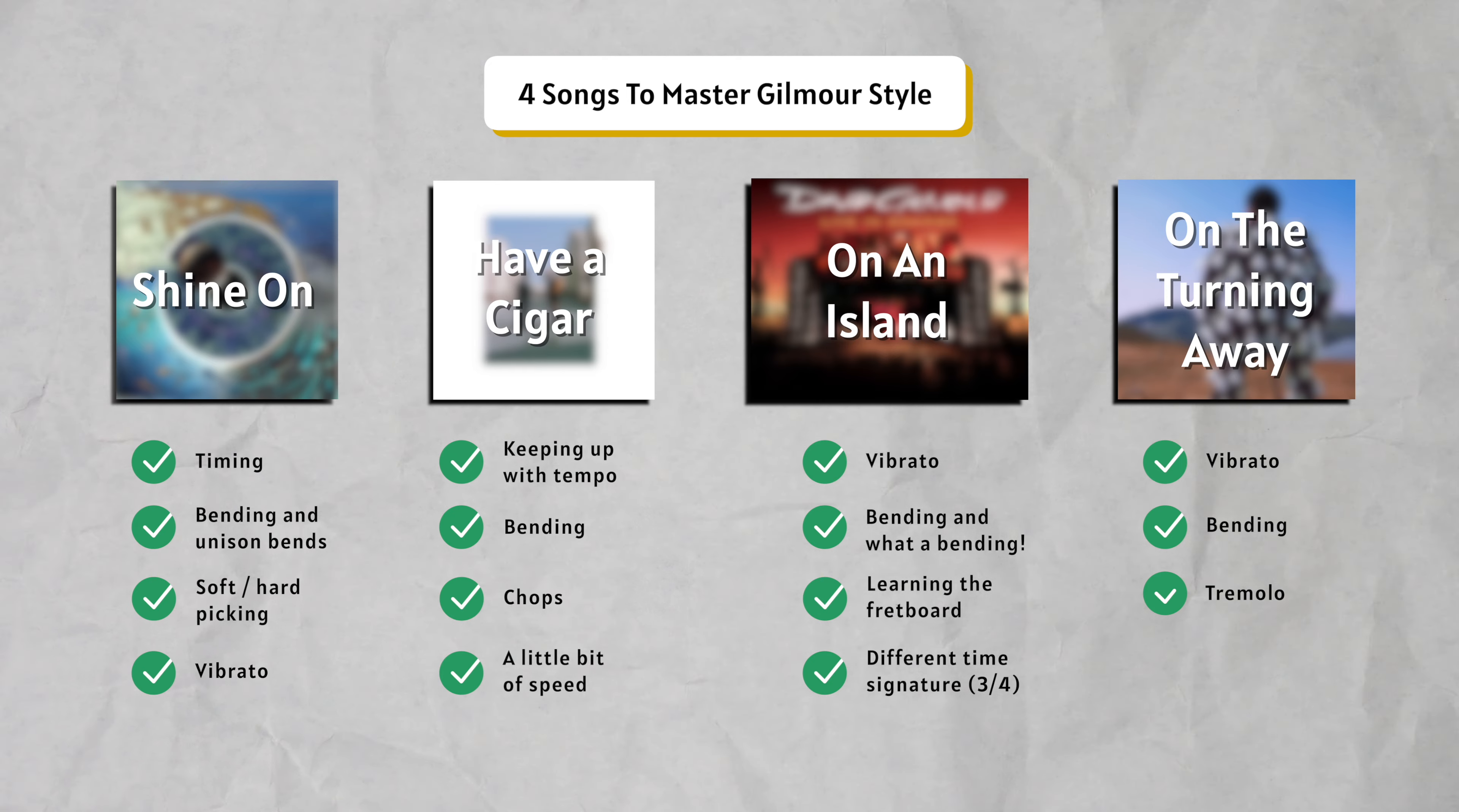So On the Turning Away will improve your vibrato, bending, tremolo, tremolo work is extremely important here, timing, learning the fretboard. I mean you're gonna play all over the keyboard and of course playing with the rhythm and everything which is again very important. It's just another master class and let's start with Shine on a Crazy Diamond.